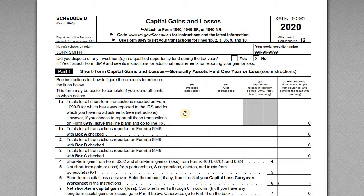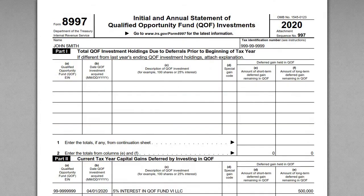After everything is said and done, how do you communicate to the IRS that you get a deferral because you invested in one of these entities? There are a couple of forms we're going to need to cover: Schedule D, Form 8949, and the actual QOF investment form, Form 8997.